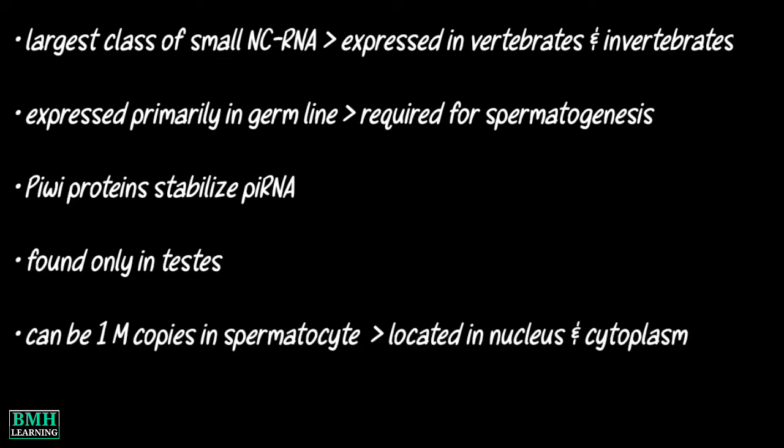There can be one million copies in spermatocyte or spermatid cells, and they are located in the nucleus and the cytoplasm. The combination of piRNA and PIWI proteins produces the silencing of mobile genetic elements.